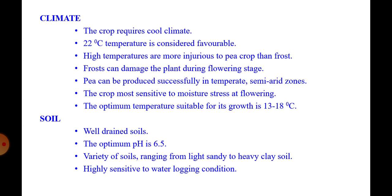Soil: well-drained soil is essential for successful production of this pea crop. Optimum pH is 6.5 but it can tolerate soil pH up to 6 to 7.5. It can grow in a variety of soils ranging from light sandy to heavy clay soils. Pea is highly sensitive to waterlogged conditions.